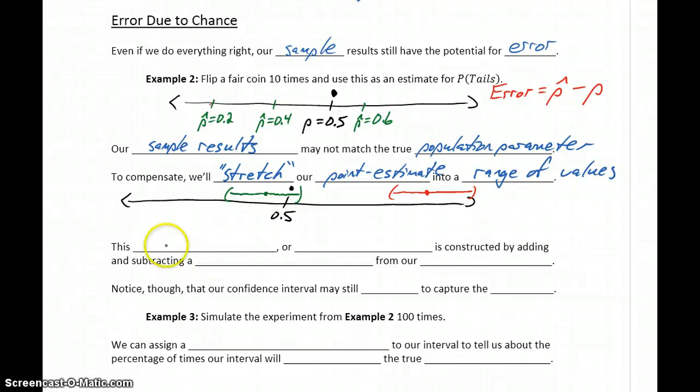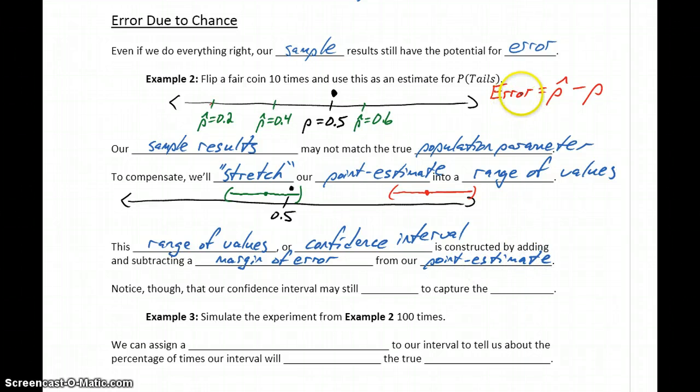So when we talk about stretching that point estimate, we get this range of values, which we refer to as a confidence interval. So we get that by adding and subtracting a margin of error from our point estimate.